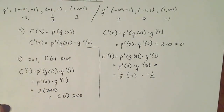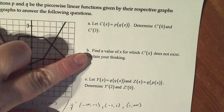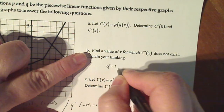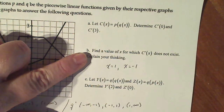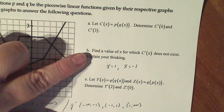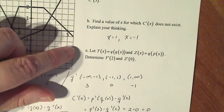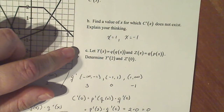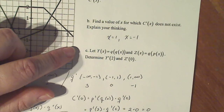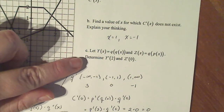You can go through using x equals minus one to prove it to yourself. The question simply asked to find a value of x — I believe both x equals one and x equals minus one are valid answers. Now the last question: let y of x equal q of q of x and z of x equal q of p of x. We're going to determine y prime of two and z prime of zero.